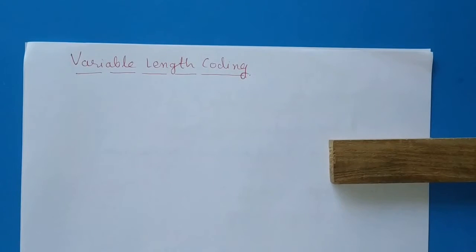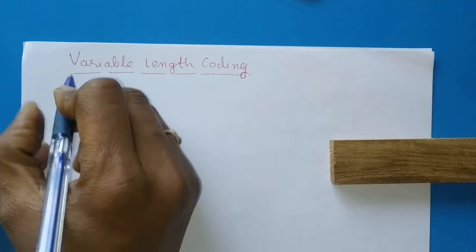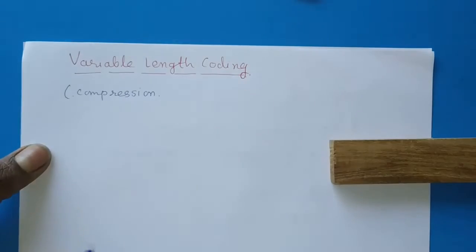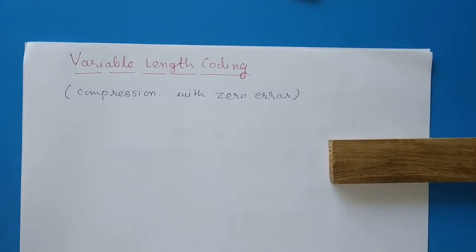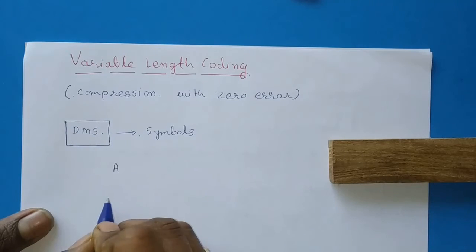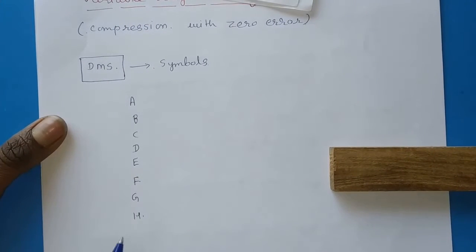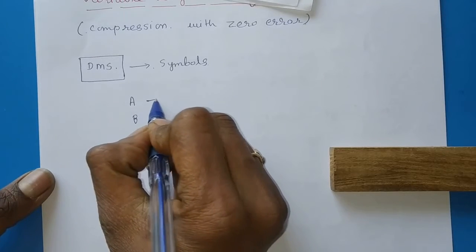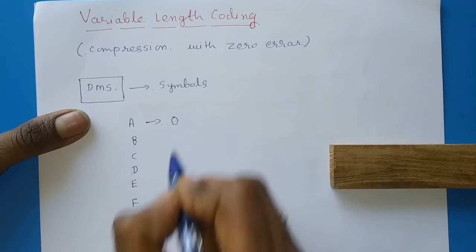In variable length coding, symbols are assigned codes of variable length. If the length of codes is variable, we can achieve compression and that too with zero error. Consider again a discrete memoryless source emitting symbols A, B, C, D through H — these 8 symbols emitted by the discrete memoryless information source.